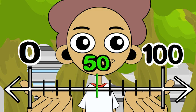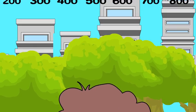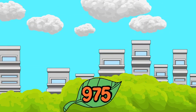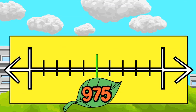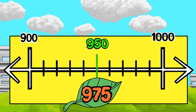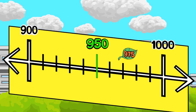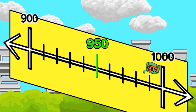And sometimes the nearest hundred is 1,000. Look at 975 — the benchmarks are 900 and 1,000, and the midpoint is 950. Since 975 is greater than 950, to the nearest hundred, 975 rounds up to 1,000.